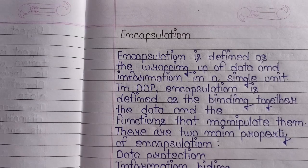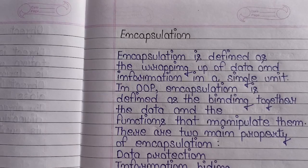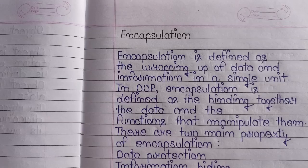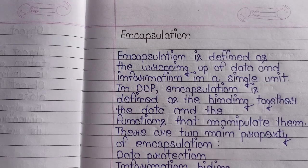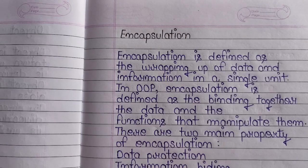What is encapsulation? Encapsulation is defined as the wrapping up of data and information in a single unit. In object-oriented programming, encapsulation is defined as the binding together the data and the functions that manipulate them. Encapsulation का meaning होता है binding data and functions within a class.